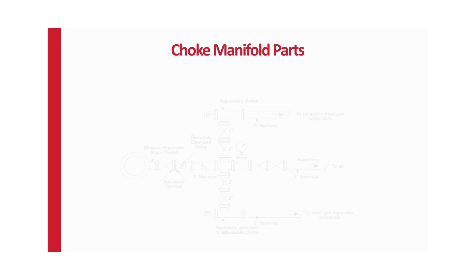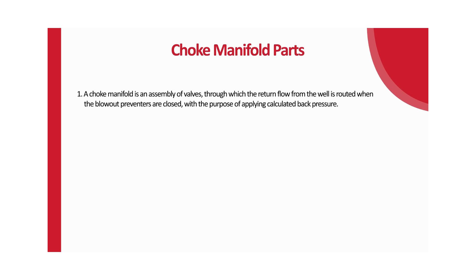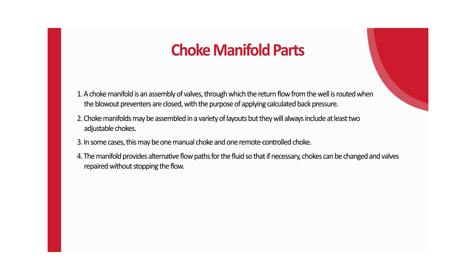A typical choke manifold for 5000 PSI working pressure service surface installation has the following characteristics. A choke manifold is an assembly of valves through which returned flow from the well is routed when the blowout preventers are closed, applying calculated back pressure. Choke manifolds may be assembled in a variety of layouts but will always include at least two adjustable chokes — in some cases one manual choke and one remote controlled choke. The manifold provides alternative flow paths so that chokes can be changed and valves repaired without stopping flow. All high pressure parts should have the same working pressure rating as the BOP stack.